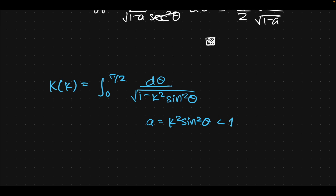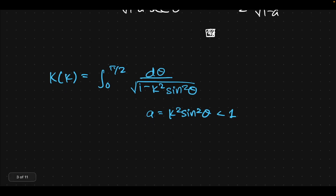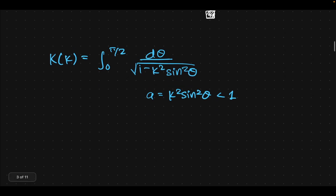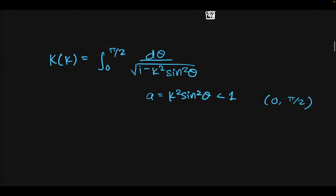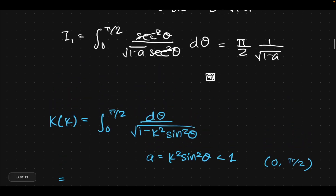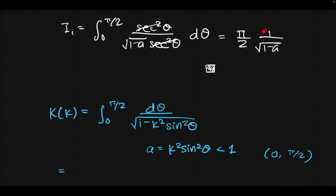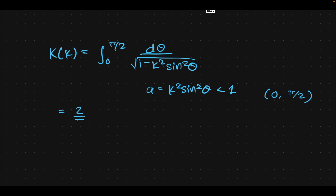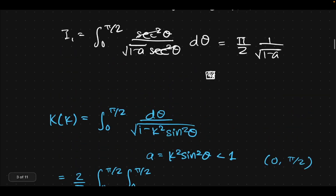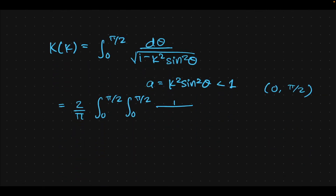Is that less than 1? Well, we can enforce that. For k we don't know, but sin²θ is going to be less than or equal to 1 on the [0, π/2] interval, so we can enforce that condition. Using the result, we can write 2/π times the outer integral unchanged, times the new integral from the lemma: 1 over (1 minus k²·sin²θ·sin²φ) dφ dθ, where φ is the new variable.